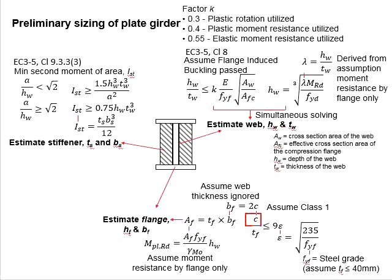As for the c, the c is determined on basis of the member being considered in the category of class 1. With that, for class 1, the limiting c per t_flange should be equal to 9 epsilon. And this epsilon is determined by the steel grade of the flange.